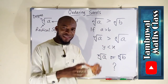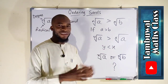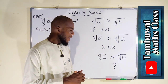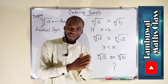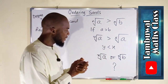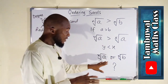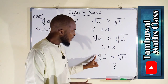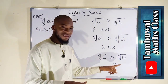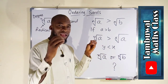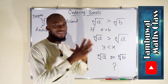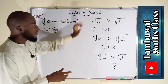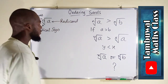So what if the radicands and degrees are entirely different? How can we determine the greatest or the least among them? The best way is to transform their degrees into a similar degree. Now let us first consider the first condition.